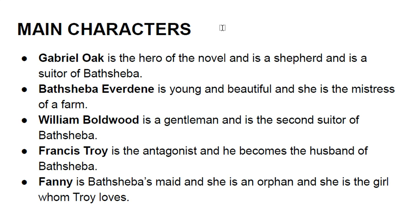The main characters of the novel include Gabriel Oak, who is the hero of the novel — a shepherd and a suitor of Bathsheba. Bathsheba Aberdeen is a young and beautiful girl and the mistress of a farm. William Boldwood is a gentleman and the second suitor of Bathsheba. Francis Troy is the antagonist of the novel and becomes the husband of Bathsheba. Fanny is Bathsheba's maid, an orphan, and the girl whom Troy loves.